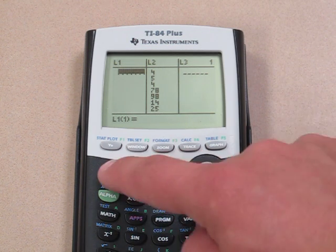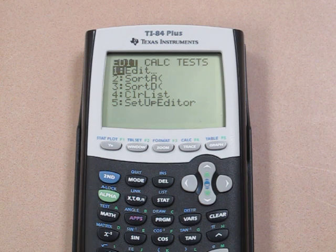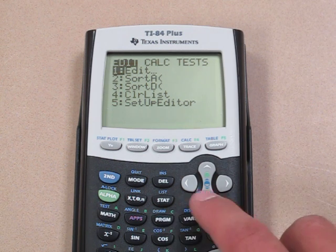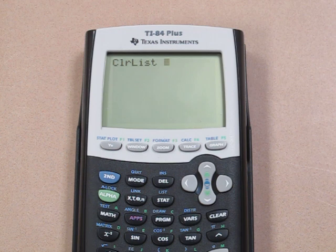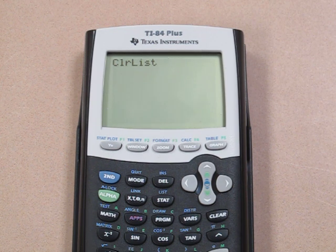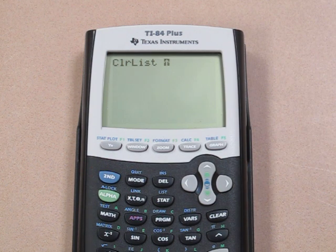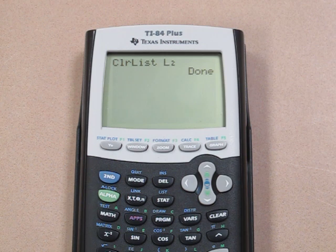Another way to clear lists is when you push the STAT button, go to CLEAR LIST, and you need to tell the calculator which list you want to clear. We do this by pushing 2ND and 2, and that will access list 2. Now list 2 is clear.